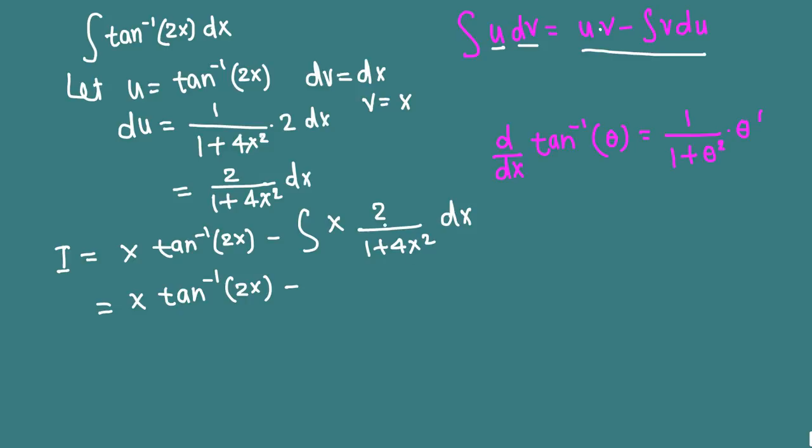What is the derivative of 1 plus 4x squared? That's 8x. So we have 8x on the top, then we can use this rule: when we have u and its derivative on the top, then it's like 1 over u du, and integral of 1 over u is natural log of absolute u value.